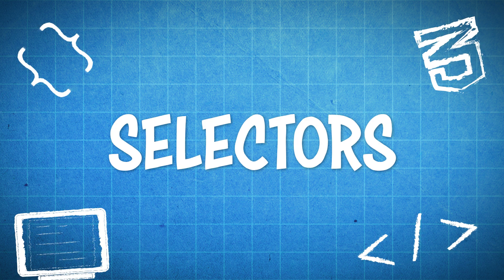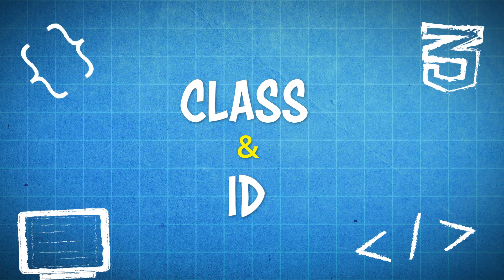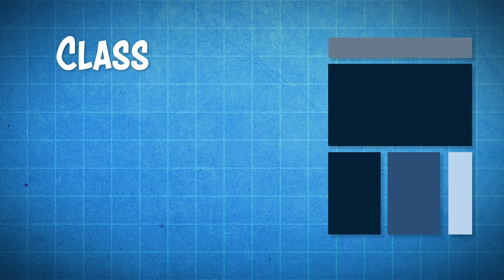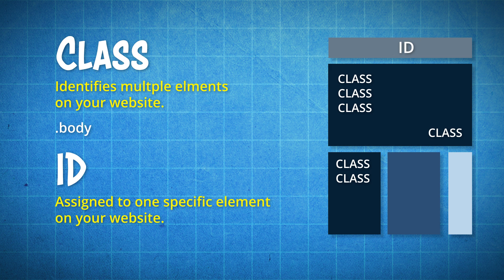Now one more important part about CSS is selectors. Selectors are what you use to identify certain elements on your website. You have class and you have ID. A class is used to identify multiple elements on your website so you can change the style of all of those elements at once, and this is indicated with a dot function. While an ID is given to one specific element on your website and is unique to that element and cannot be used elsewhere. This is indicated by a hashtag function, and is used in order for you to change that one element specifically without affecting everything else.